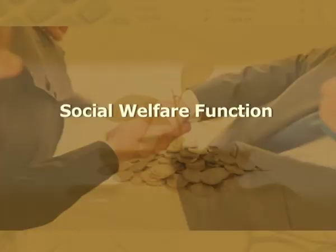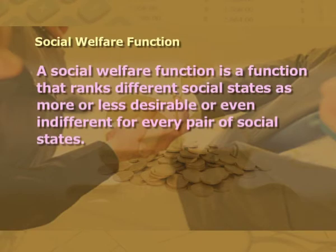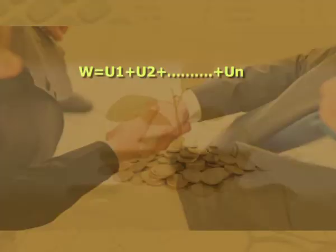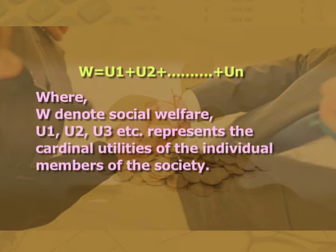Here we are going to discuss various concepts of welfare economics. A social welfare function is a function that ranks different social states as more or less desirable, or even indifferent, for every pair of social states. The concept of social welfare function is explained by various economists. The classical social welfare function was first put forward by Bentham, Pigou, and Marshall. According to them, social welfare is the sum of cardinal utilities obtained by all members of a society. Mathematically, W = U1 + U2 + ... + Un, where W denotes social welfare and U1, U2, U3, etc. represent cardinal utilities of individual members.